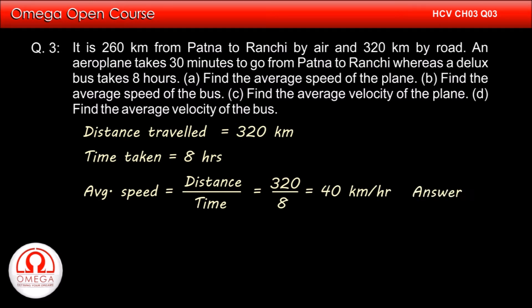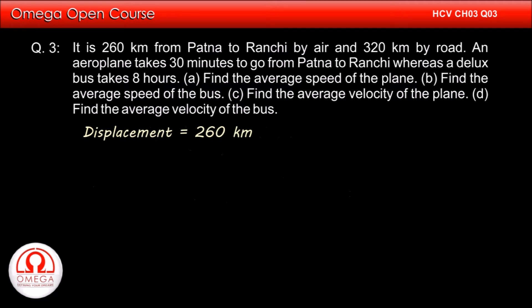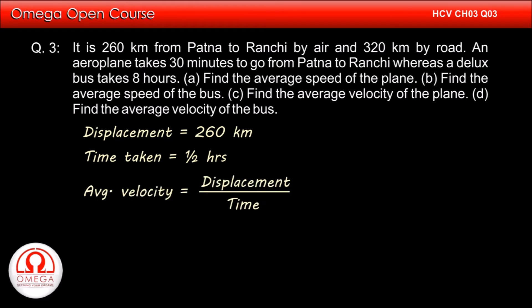Since the plane flies in a straight line, the distance travelled by the plane is equal to its displacement. Thus, the displacement of the plane is 260 km and the time taken is half an hour. Therefore, the average velocity is 260 divided by 1/2, which equals 520 km per hour. This is the answer to part C of the question.